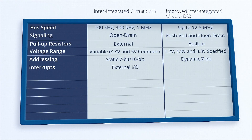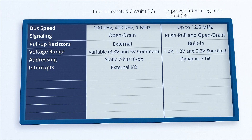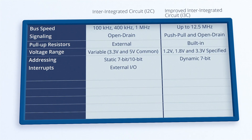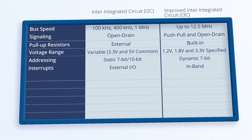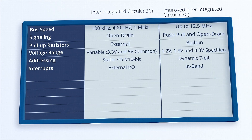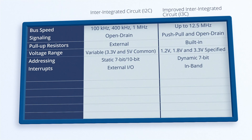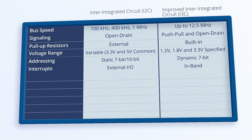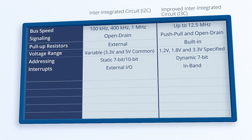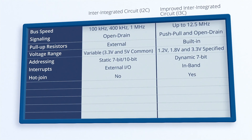i2C requires using an extra I/O line to enable a target to notify the controller that data is ready. i3C allows the target device to use the SDA and SCL lines to signal an interrupt. This type of in-band signaling can also be used to implement hot-join functionality in i3C.